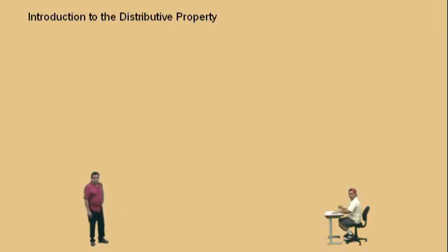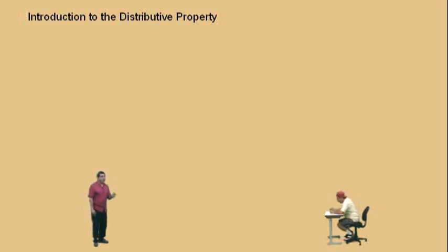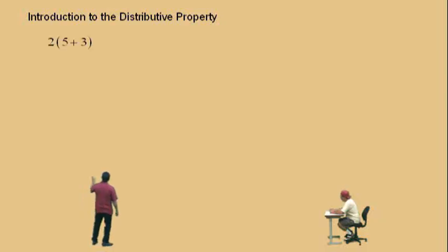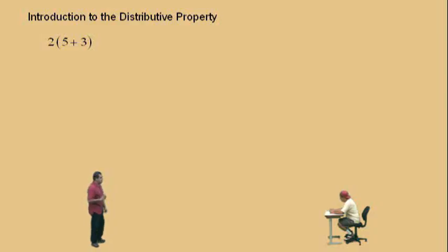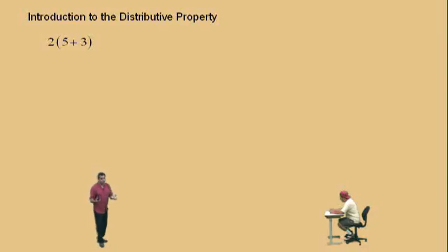So, what the distributive property is: we're going to distribute a number across an addition or a subtraction using multiplication. Let me give you an example. 2 times (5 plus 3) — notice the 5 plus 3 is in parentheses. Before we get to the distributive property, what we could do is add the two numbers in the parenthesis. You'll see when we get to order of operations that is what we're supposed to do first.